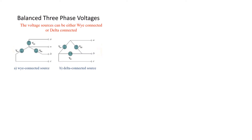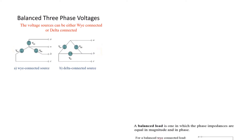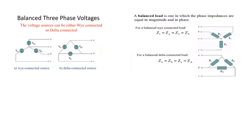The voltage source can be connected in star (Y) or delta fashion, and similarly the load can be connected in Y or delta fashion. When all loads are equal — Z1, Z2, Z3 equal, or ZA, ZB, ZC equal — we call this a balanced load. If they are not equal, it is an unbalanced load.